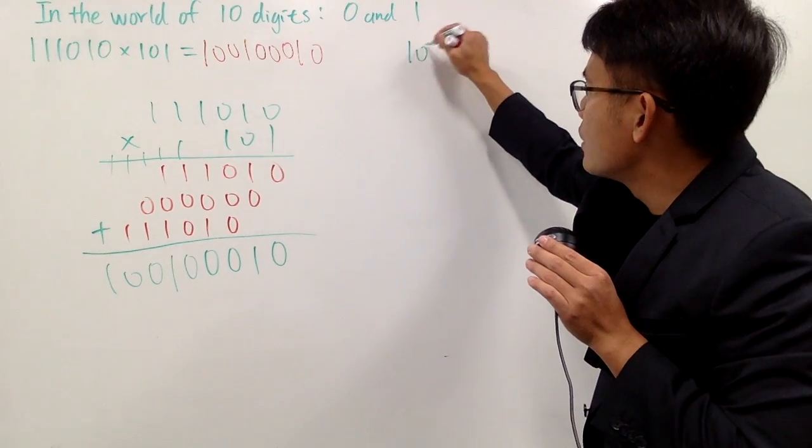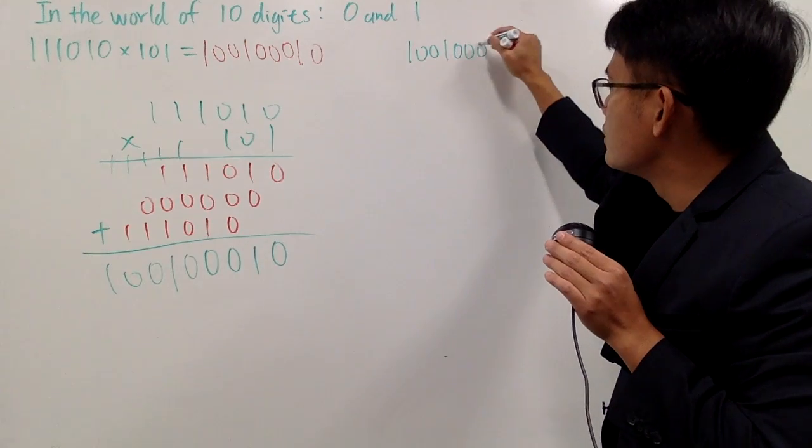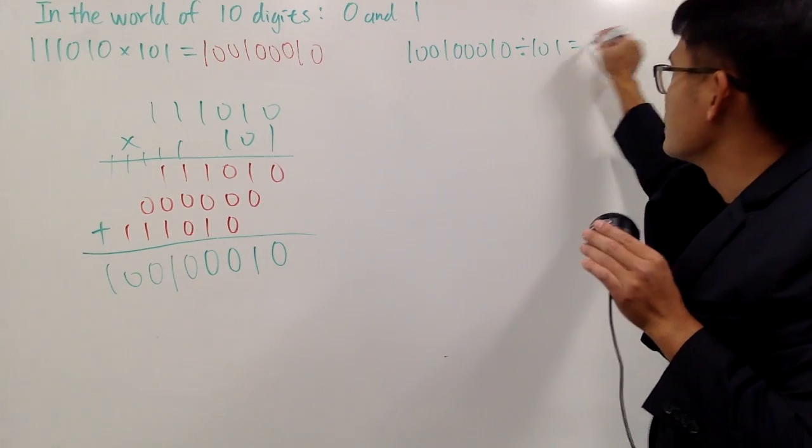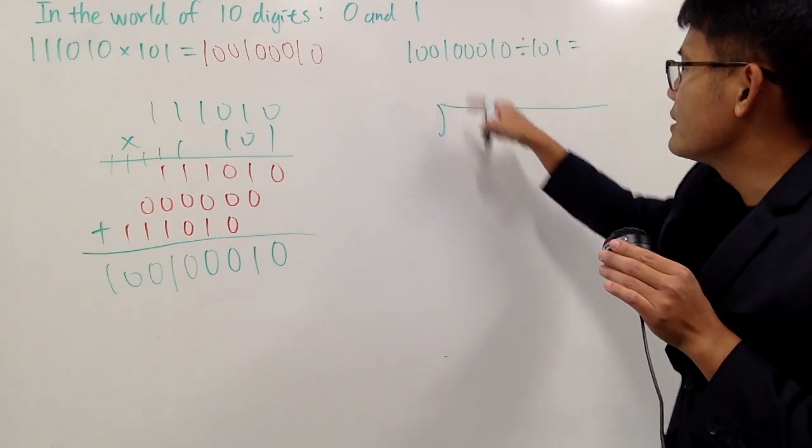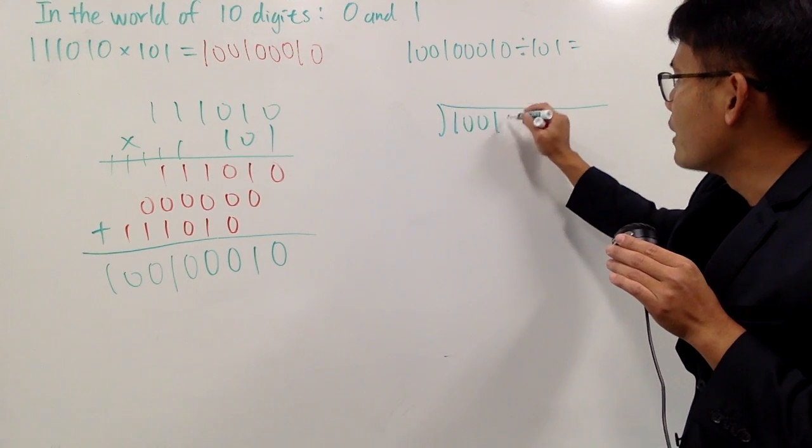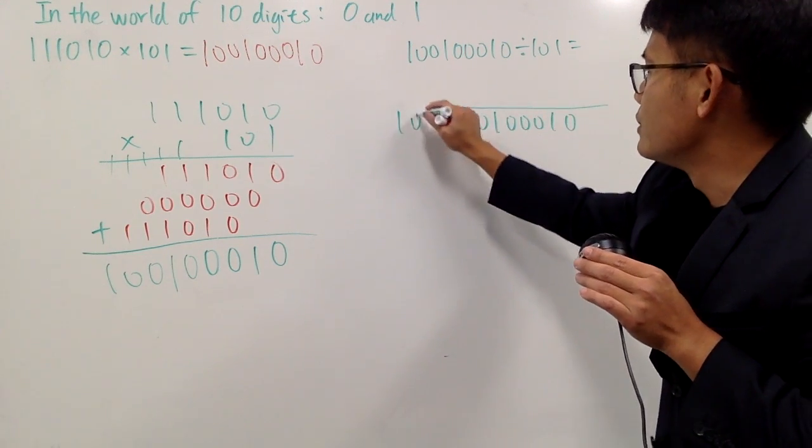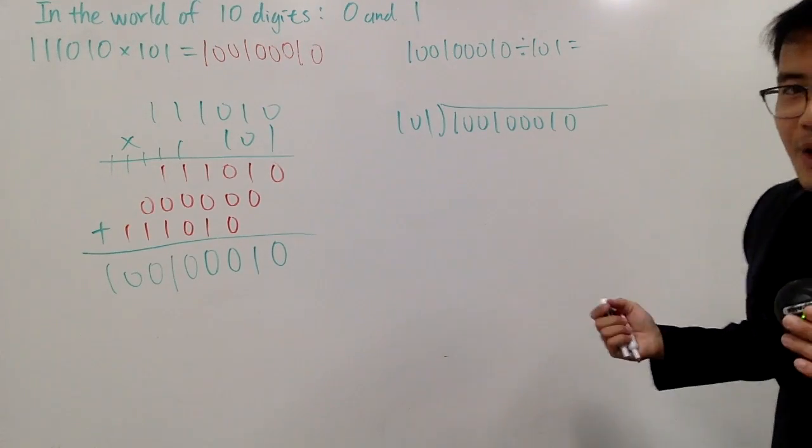So let's see. I want to do 1, 0, 0, 1, 0, 0, 0, 1, 0, divided by 1, 0, 1. I want to see what the answer is. So let's go ahead and do our long division. Put this number inside. 1, 0, 0, 1, 0, 0, 0, 1, 0. Divided by 1, 0, 1. Well, here we go.